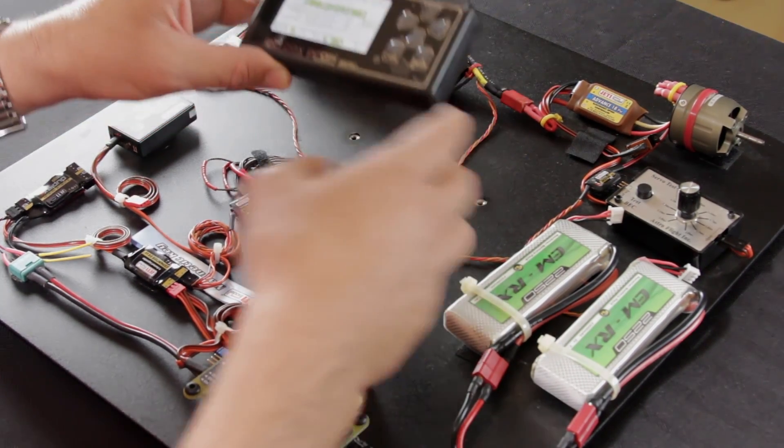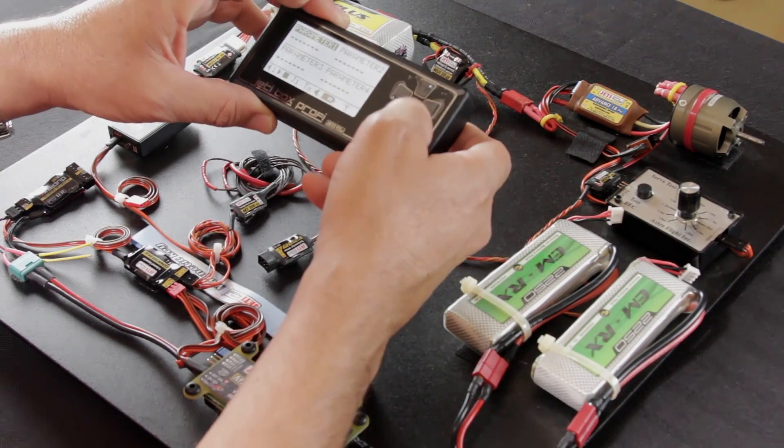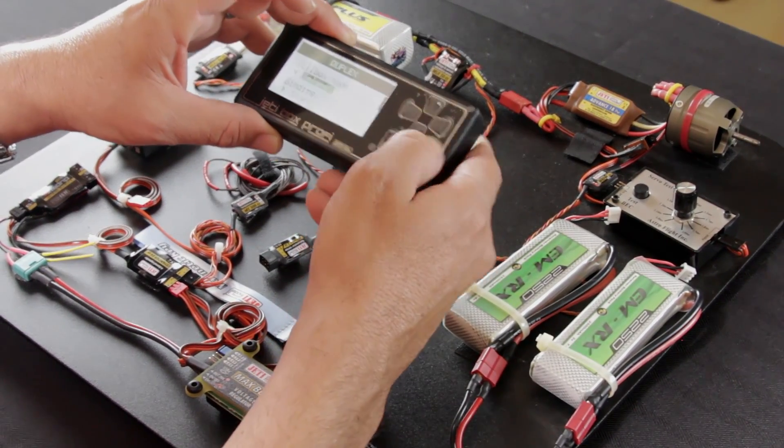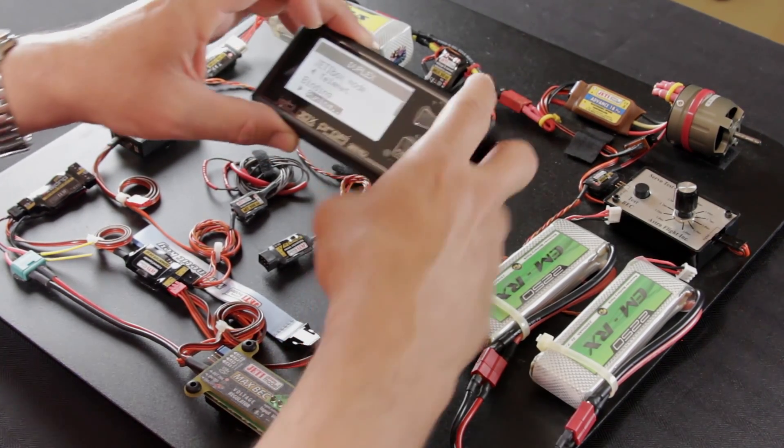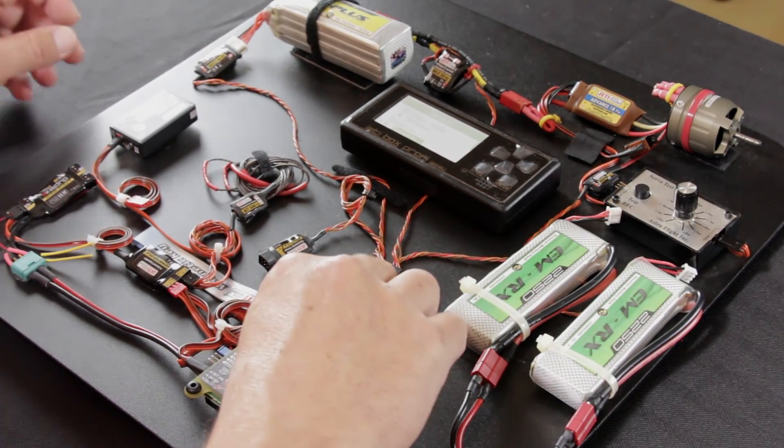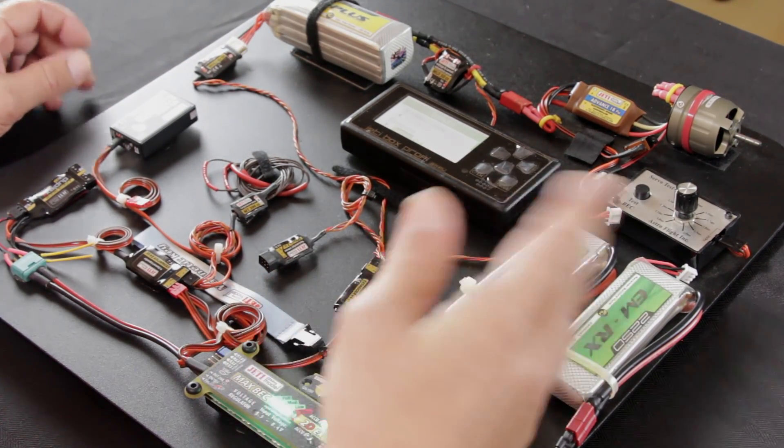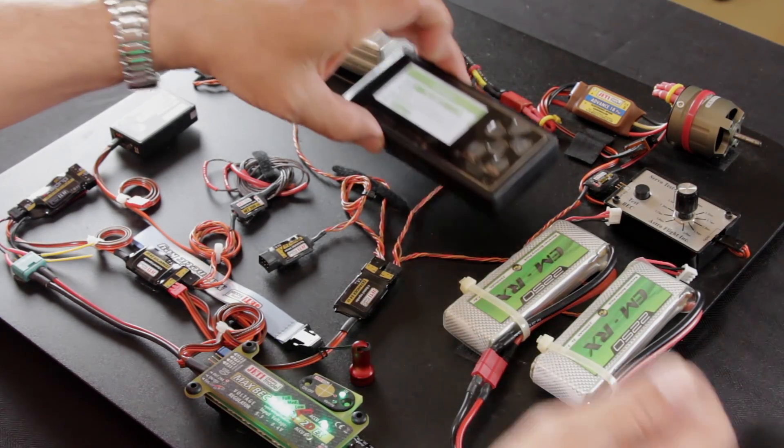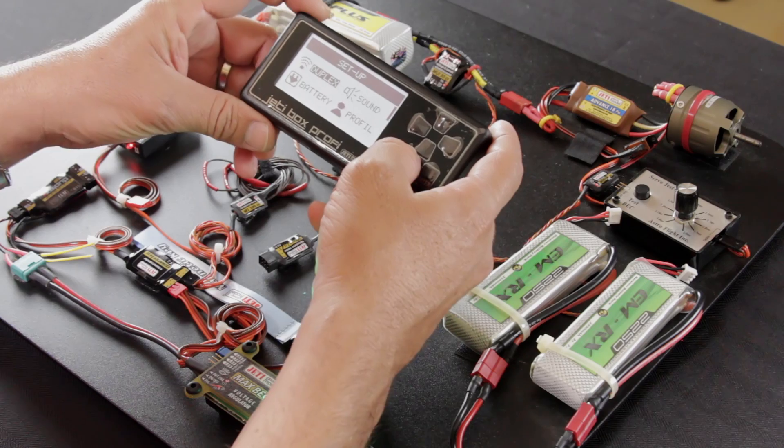Now we're going to need to rebind because we bound to the other receiver. So we're going to go through the same process we did last time to do that. We're going to go to Setup, Duplex, and Binding. Once you click Start, it shows running. We'll turn the system on, wait to hear it bind, which we did. And we'll go back into our main menu.